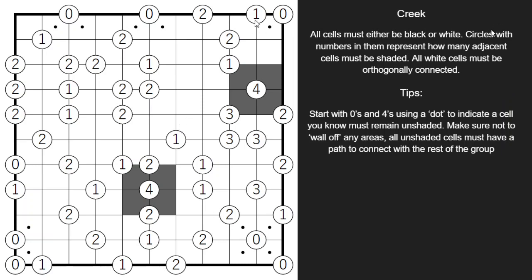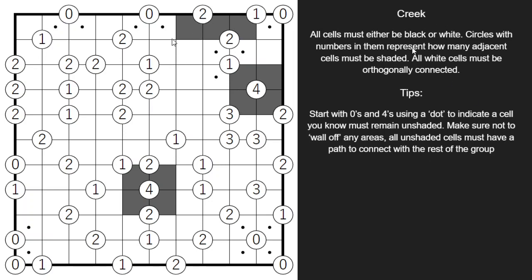Up here, this clue only sees two cells and we've already indicated which one's unshaded, so the other one must be shaded. This one here, we've already shaded in one cell, so the other three must be unshaded — and that solves this two. This two already has two unshaded cells, so the other two must be shaded. Anytime you have numbers along the border, those are a little bit easier because they don't see a full four cells like the middle numbers do — they're only going to see two cells.